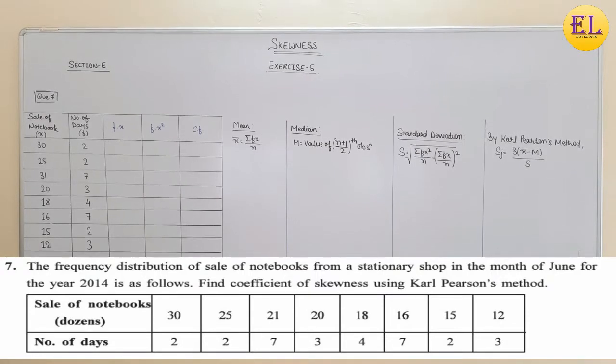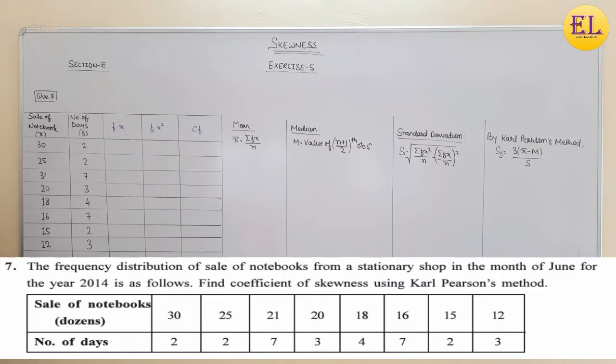Find coefficient of skewness using Carl Pearson's method and the data is given in the form of a table. The data shows sale of notebooks which we consider x, number of days which we consider frequency. And this data is discrete frequency distribution.